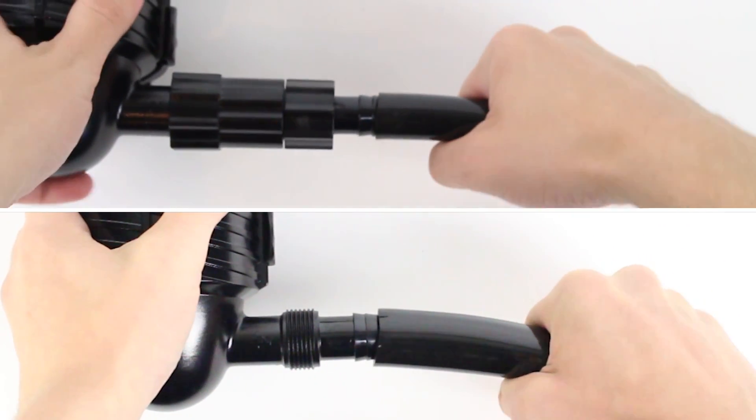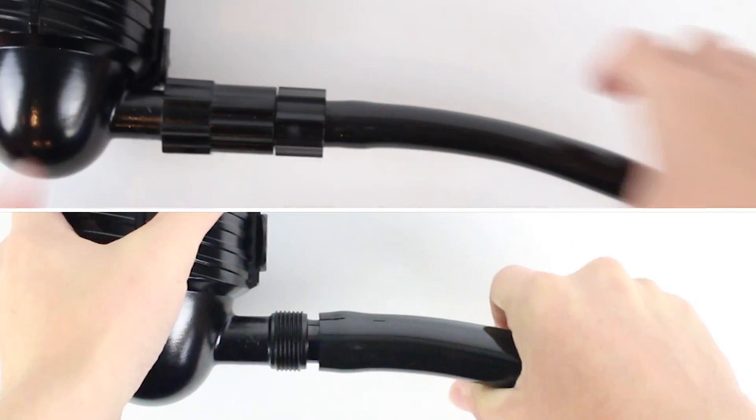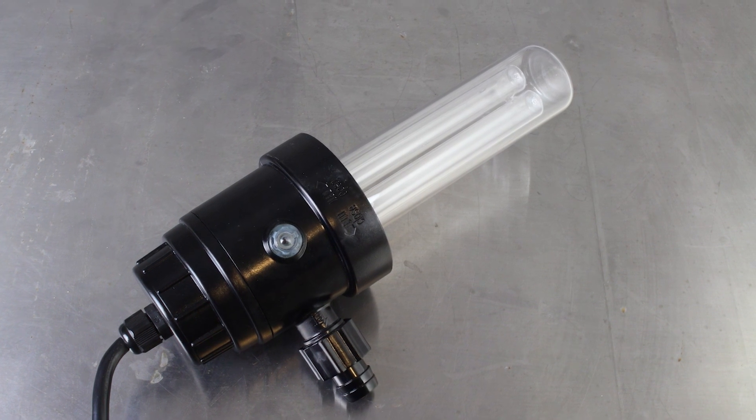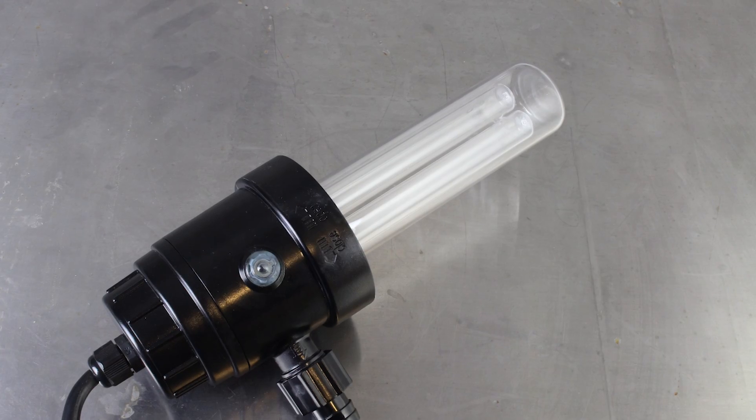The hose barbs accept 5/8 or 3/4 inch tubing and Coralife recommends a flow rate of 200 to 400 gallons per hour for maximum effectiveness. The Turbo Twist uses an 18 watt UV-C ultraviolet lamp with a service life of approximately 8,000 hours or about 1 year of continuous use.